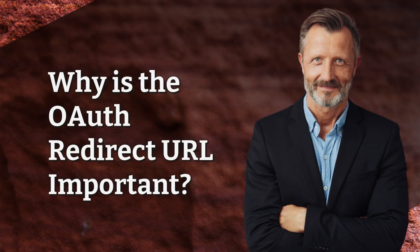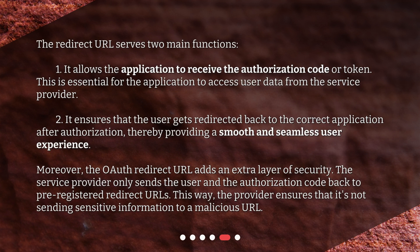Why is the OAuth redirect URL important? The redirect URL serves two main functions. First, it allows the application to receive the authorization code or token, which is essential for the application to access user data from the service provider. Second, it ensures that the user gets redirected back to the correct application after authorization, thereby providing a smooth and seamless user experience. Moreover, the OAuth redirect URL adds an extra layer of security. The service provider only sends the user and the authorization code back to pre-registered redirect URLs, ensuring that it's not sending sensitive information to a malicious URL.